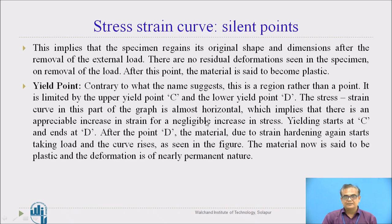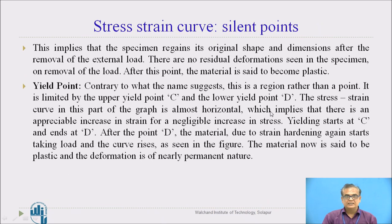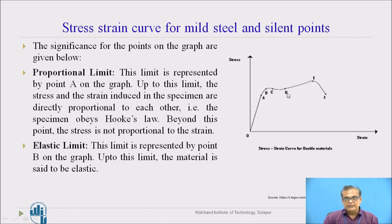Once the elastic limit is passed, we reach points C and D, which are the yield points. C is the upper yield point and D is the lower yield point. In this region, load practically remains constant while strain increases continuously — most of the curve between C and D is horizontal. At the same loading, the strain increases considerably. This is called the yield stress region, with C being the upper yield point and D being the lower yield point.